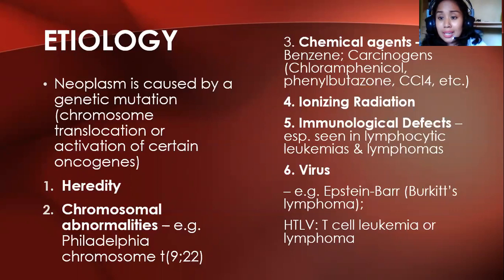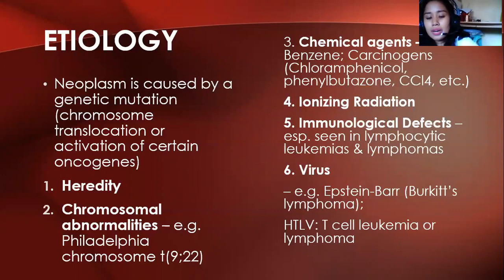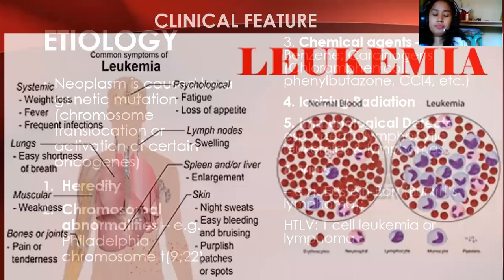Leukemia is more fluid — there's something wrong with the blood. Lymphoma is usually solid, with masses or tumors found in lymphatic tissues. HTLV (human T-lymphotropic virus) can result in T-cell leukemia or lymphoma. Leukemia and lymphoma are different diseases.